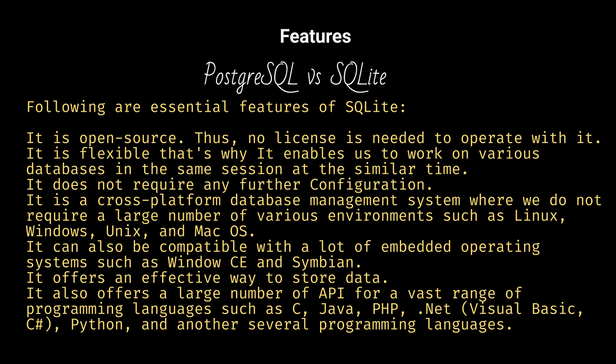Following are essential features of SQLite: it is open source, thus no license is needed to operate with it. It is flexible, enabling work on various databases in the same session at the same time. It does not require any further configuration. It is a cross-platform database management system that works across Linux, Windows, Unix, and Mac OS, and is also compatible with embedded operating systems such as Windows CE and Symbian.